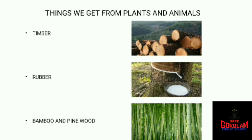The next is rubber. Rubber is a liquid — you can see a white colored liquid there. Rubber is obtained from rubber trees. It is used to prepare tires on vehicles and also to prepare erasers.